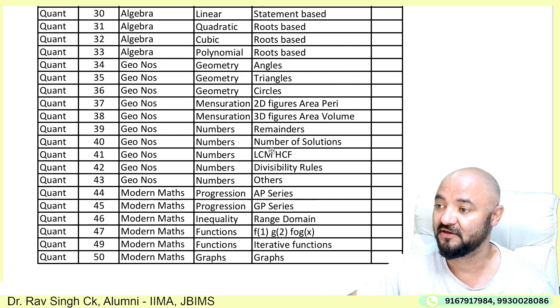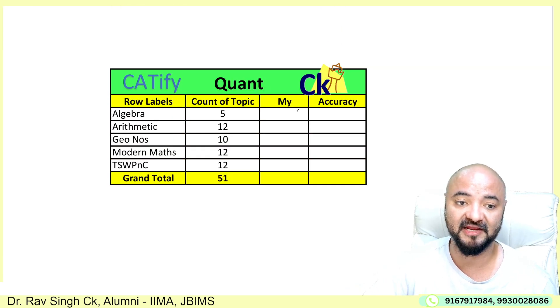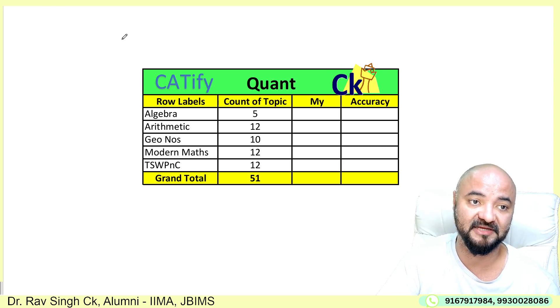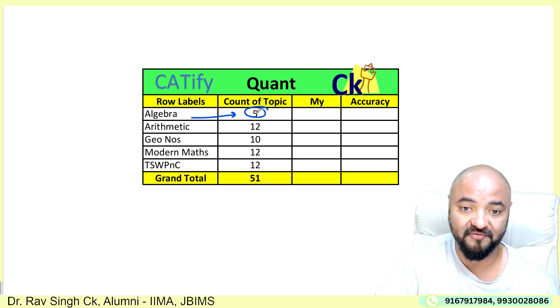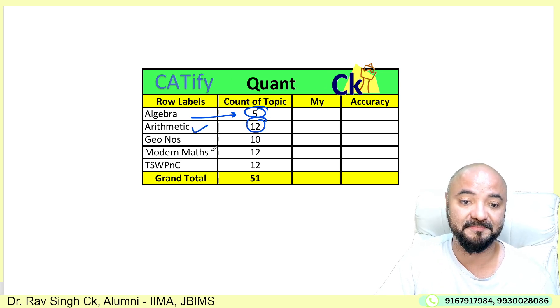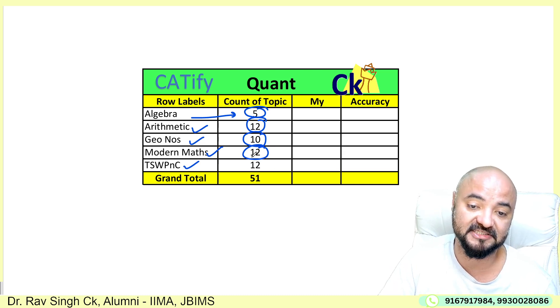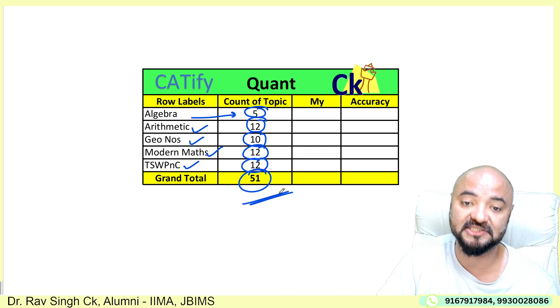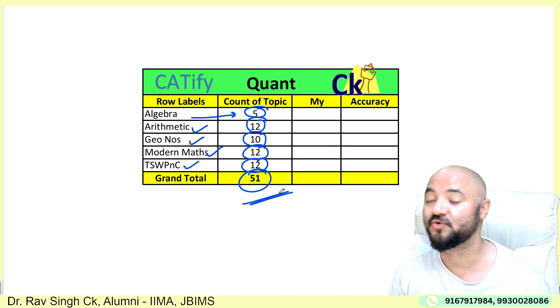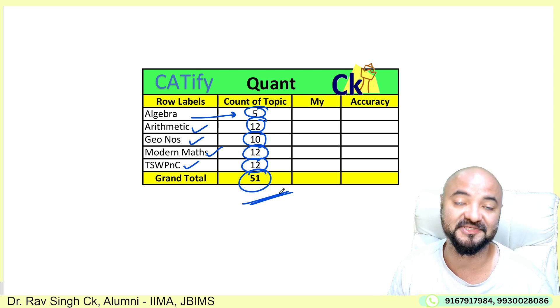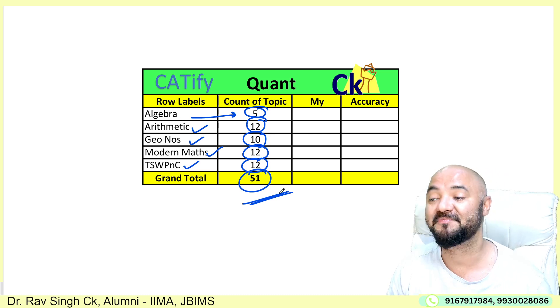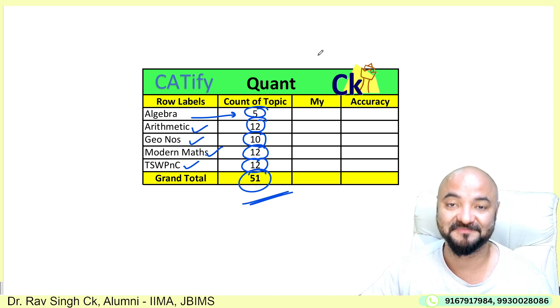There are 55 topics in total and I have to cover all the basics — no advanced level, only basic level. Looking at the breakup: Algebra has five topics, five questions. Arithmetic has 12 chapters. Geometry and numbers combined — 10 chapters. Modern math — 12 chapters. PnC and probability, time and work, time speed distance — total 12 chapters. If you can do all 55 topics, you can easily score well in the CAT exam. That's why CAT is easy to crack — let's start the preparation. All the best!